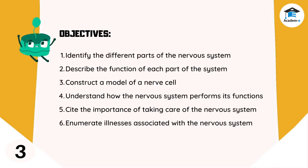Objectives: At the end of the lesson you should be able to: one, identify the different parts of the nervous system; two, describe the function of each part; three, construct a model of a nerve cell; four, understand how the nervous system performs its functions; five, cite the importance of taking care of the nervous system; six, enumerate illnesses associated with the nervous system.